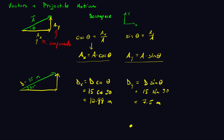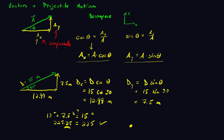So to have a total displacement of 15 meters, I go 12.99 meters in this direction and 7.5 meters up. Notice if I add these up it's not equal to 15, but it should follow the Pythagorean theorem. Let's check: 13 squared plus 7.5 squared is 225.25, which equals approximately 15 squared (225). The small difference is just rounding. So this decomposition works.